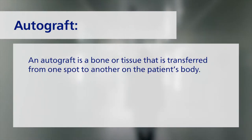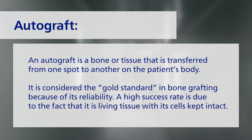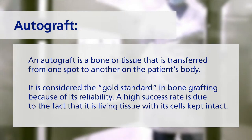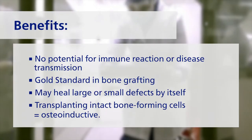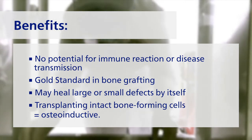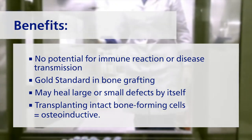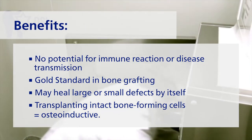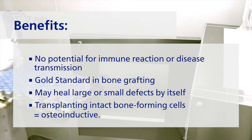Autograft is bone or tissue transferred from one spot to another in the patient's own body. It is considered the gold standard in bone grafting because of its reliability. A high success rate is due to the fact that this is living tissue with its cells kept intact, with no potential for immune reaction or disease transmission. It may heal a large or small defect by itself, and the intact bone-forming cells make the material osteoinductive.